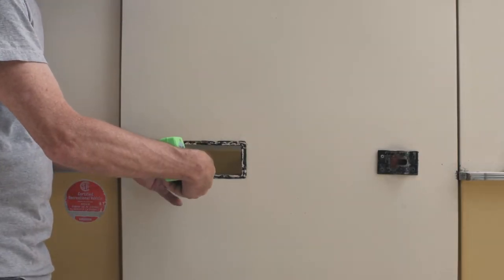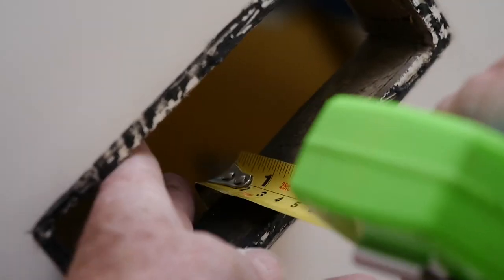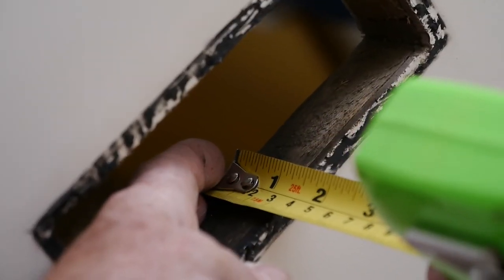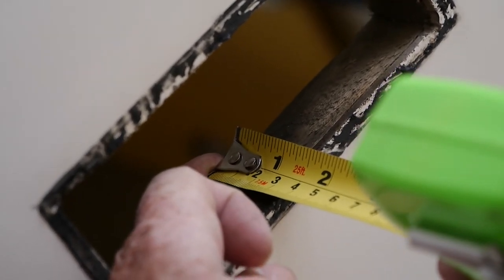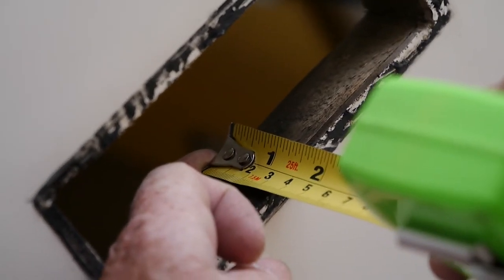With the lock removed, measure the thickness of the door. The door thickness must be between 1 1⁄8 inches to 1 3⁄8 inches thick. If your door is outside these dimensions, refer to the written instructions.